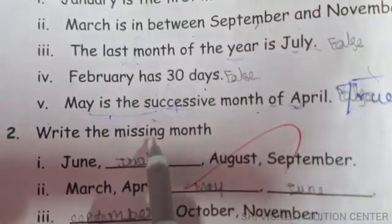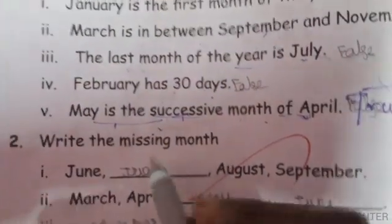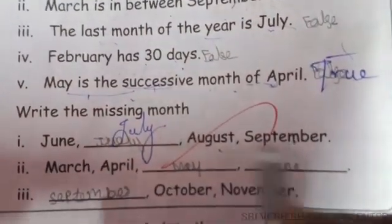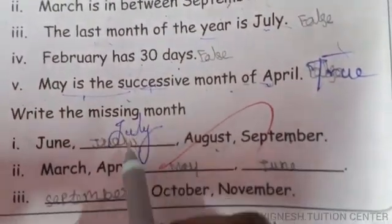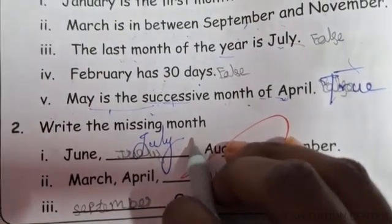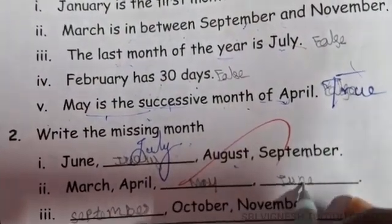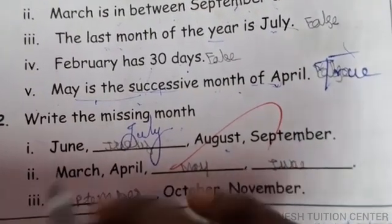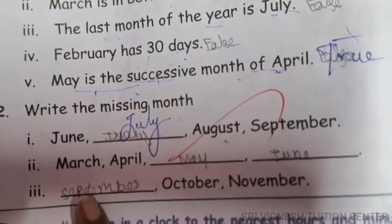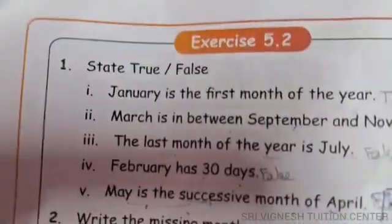Next exercise: Write the missing month. July is the 7th month. The sequence goes: March, April, May, June; then July, August, September, October, November. October is the 10th month. That completes Exercise 5.2.